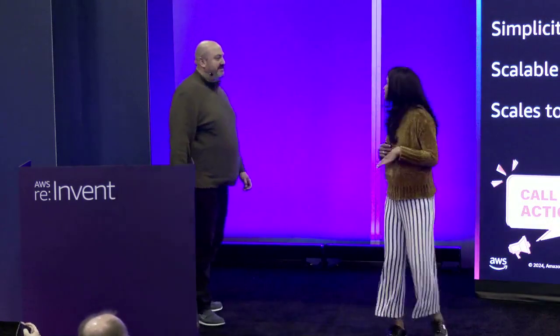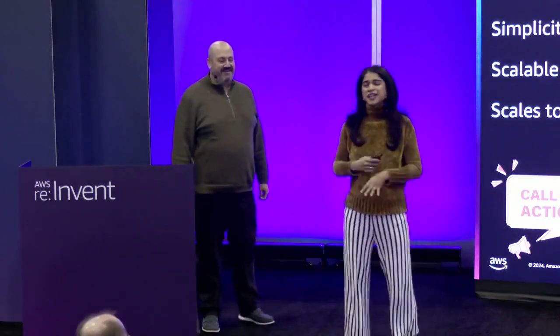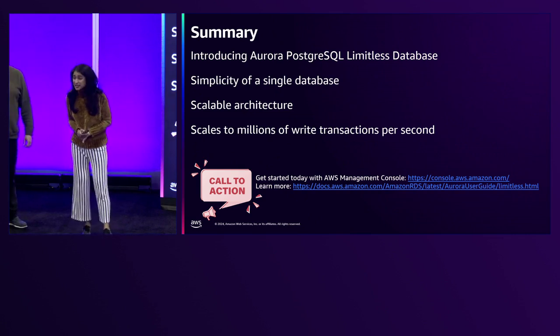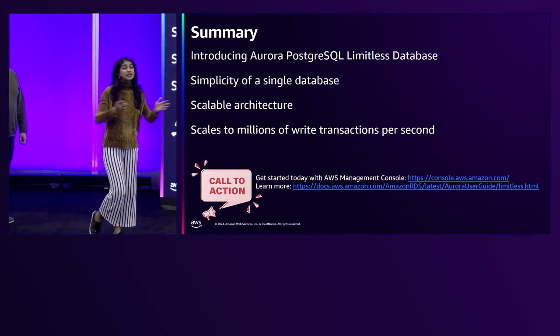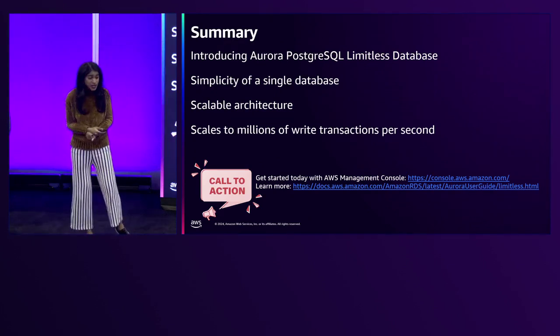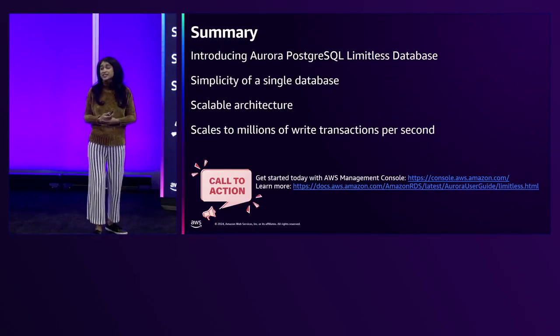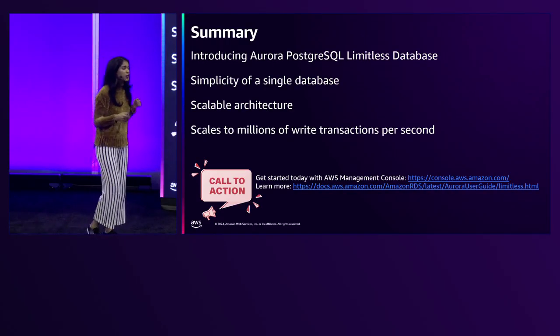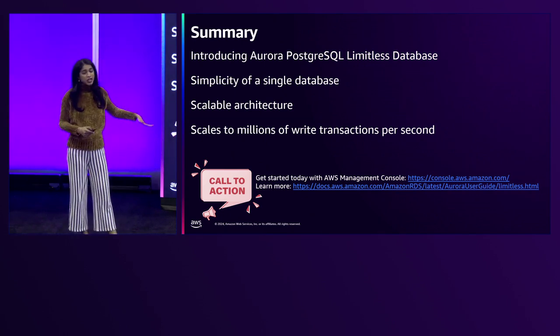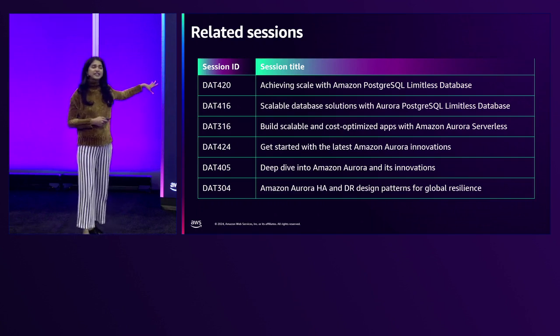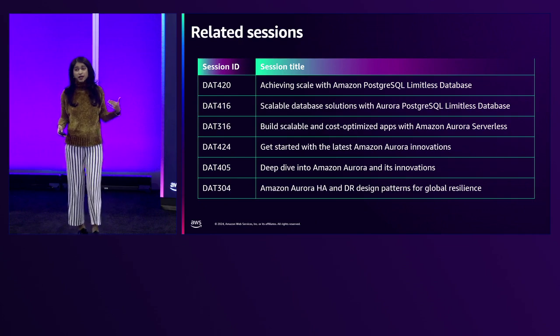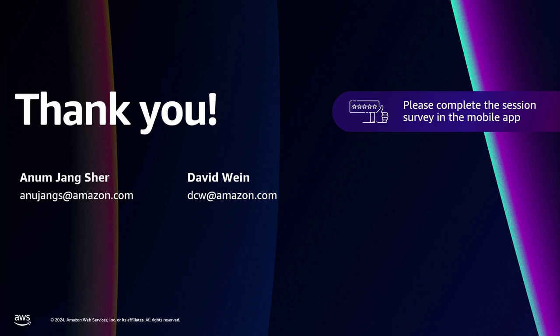In the last 15 minutes you've learned what Aurora Postgres Limitless Database is: a Postgres-compatible horizontally scaled-out solution that gives you the power of sharding with the simplicity of a single cluster, powered by a scalable distributed architecture that scales to millions of write transactions per second. It's generally available — go into the console or documentation to learn more. There are also related sessions with videos available on YouTube. Please fill out the survey and thank you for attending.